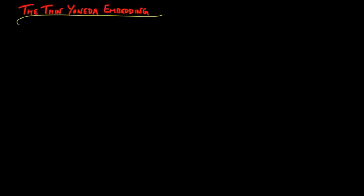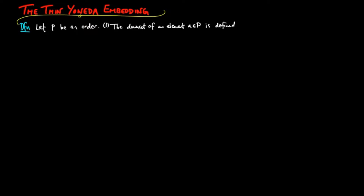In this video, we look at the thin Yoneda embedding. We begin with a definition. Let p be an order. One: the down set or lower segment of an element a in p is defined to be those elements x in p such that x is less than or equal to a.